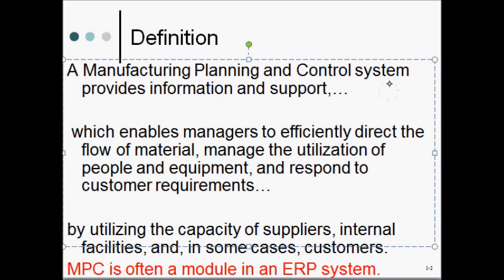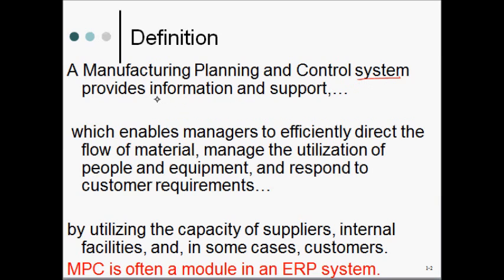This definition presents three important facets of manufacturing, planning, and control. The first relates to what exactly a manufacturing, planning, and control system is. We see here that it's actually a system which provides information and support. That's an important feature of manufacturing, planning, and control — something which helps a company by means of information and by means of some support activities.